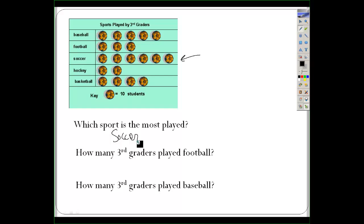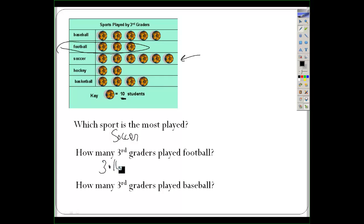How many third graders played football? I'm going to look at the football column — there are three pictures. That doesn't mean three students, because the key says each picture equals 10 students. So I need to take three times 10, which is 30. There are 30 third graders: 10, 20, 30.